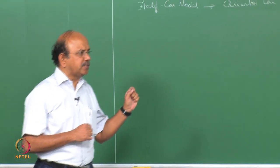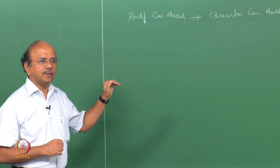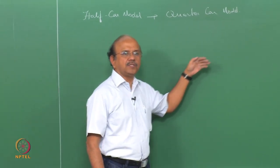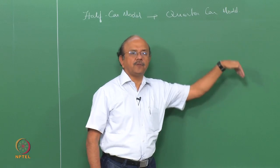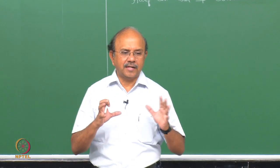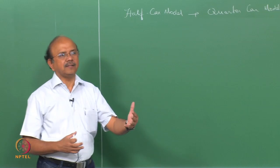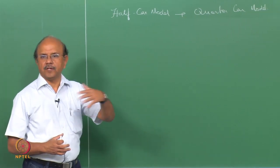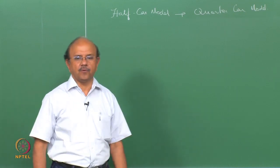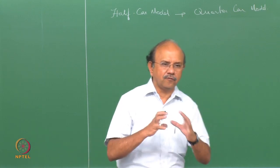In actuality, we have to consider the road which gives the input — how the road is represented, how that goes as an input — all those things are important and we are going to see that from the next class onwards. The next 4 to 5 classes, we will understand the road, the statistical nature of the road, how it is represented, and how that affects the performance of the vehicle. So we will quickly finish some of the things in the quarter car model and then go to the half car model and finish that part as well.